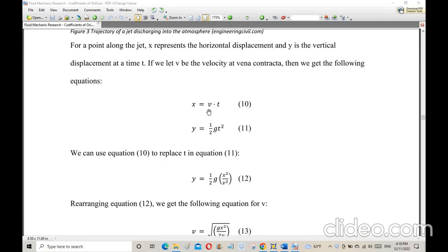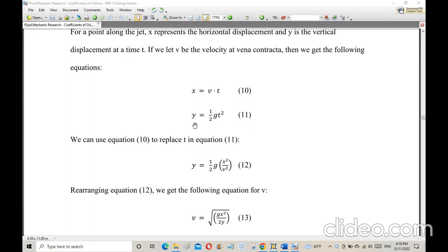x is simply v times t, and y is 1/2 times g times t squared, which is the equation of a free-falling body that starts from rest.